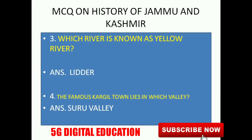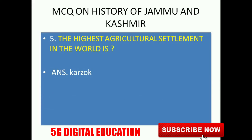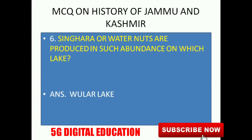Next question: Which river is known as the Yellow River? The Lidar River is known as the Yellow River. Next: The famous Kargil town lies in which valley? It is in the Suru Valley. Next: The highest agriculture settlement in the world is Garzok.